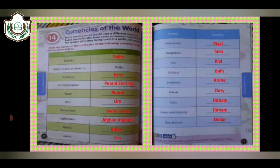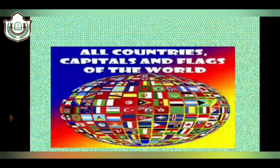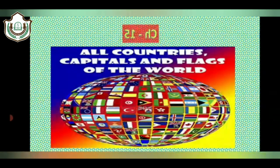So this is your book work and as you can see, we have just discussed the name of the currencies of all these countries. Among all these, the most traded currency around the world is the United States Dollar. Now move to our next chapter, that is chapter number 15: Countries and Capitals.